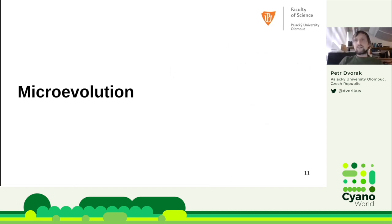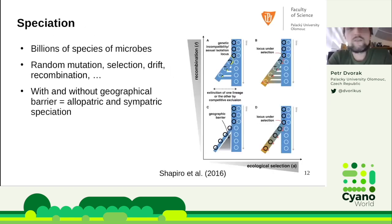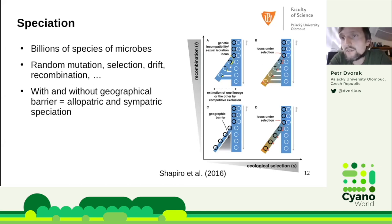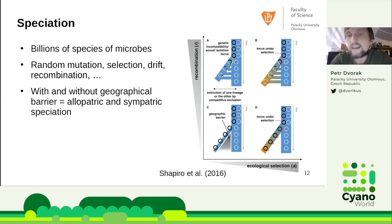Now we jump to recent events, looking at speciation. This is general for all microbes: there are hundreds of millions, maybe billions of species. Evolution is driven by factors like mutation, selection, and recombination, which can all act with or without a geographical barrier. In microbes, the question about geographical barriers can be different from plants and animals.